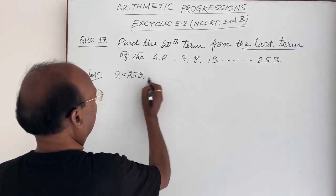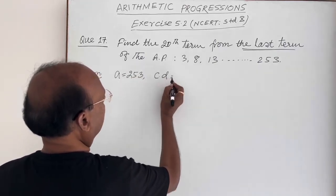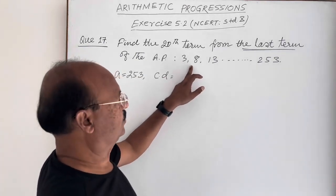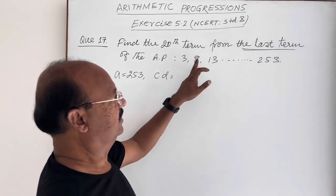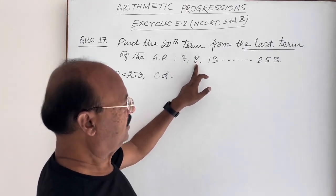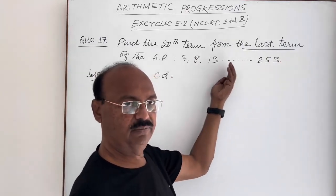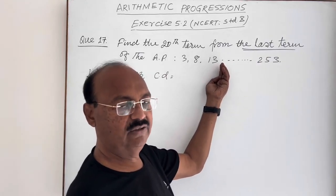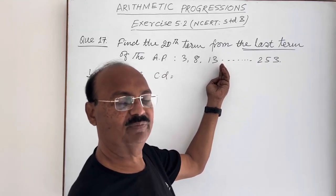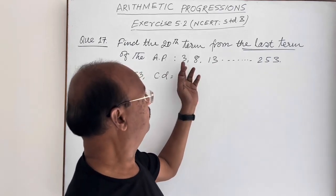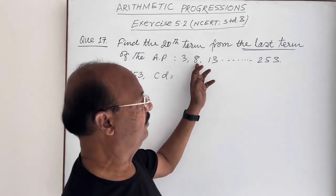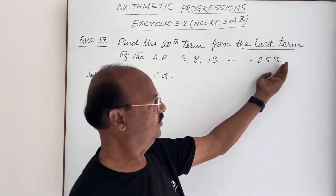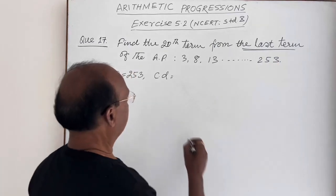Common difference is the difference of two consecutive terms: 8 minus 3 is 5, 13 minus 8 is 5. But if you consider from last term, the numbers are in decreasing order, so the value of common difference will be negative. Instead of D equals 5, we take D equals minus 5 because we are coming from last to this side.